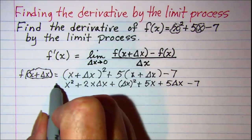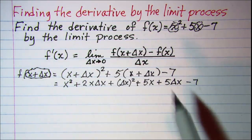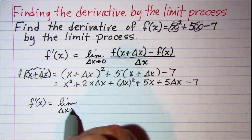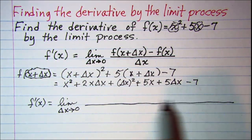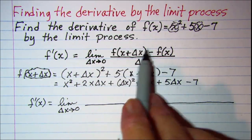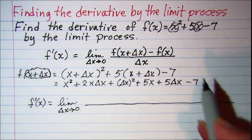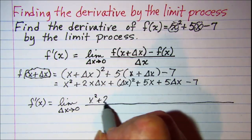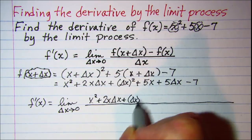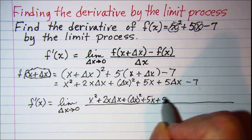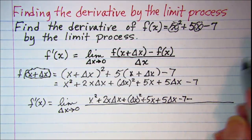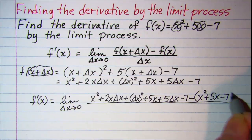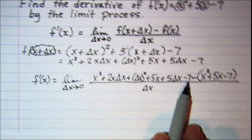Now let's set up f prime of x equal to the limit as delta x approaches 0. The numerator is x squared plus 2x delta x plus delta x squared plus 5x plus 5 delta x minus 7, and then we subtract f of x, which is x squared plus 5x minus 7, all divided by delta x.